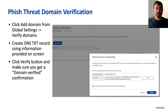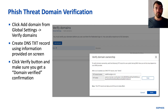The process is quite easy actually. You just go into your global settings and verify domains. Once you do that, we'll pop up a box with the value that you need to copy and paste into your DNS as a brand new TXT record.